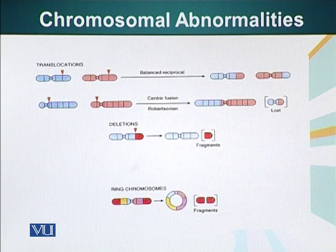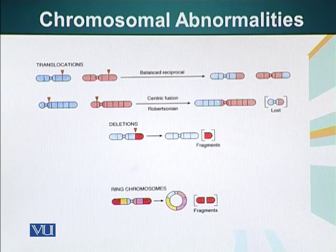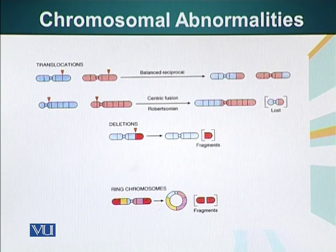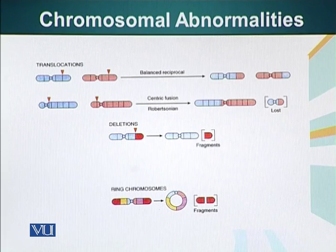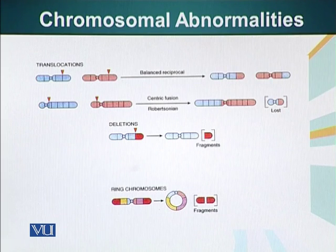Now let's talk about structural abnormalities of chromosomes. There can be translocations, meaning part of a chromosome breaks off and exchanges a piece — which can be of similar, larger, or smaller size — with another chromosome. You can see in the photograph a small piece of the blue chromosome being exchanged with a small piece of the red chromosome. This is a balanced reciprocal translocation.